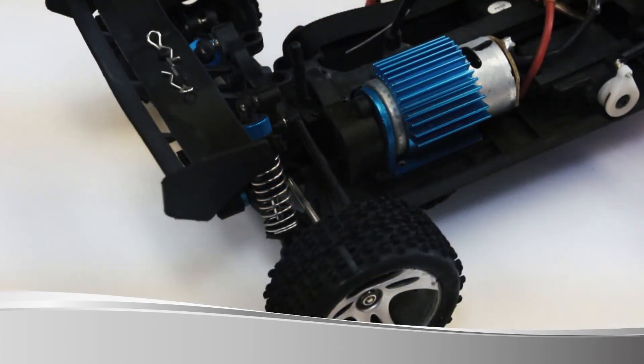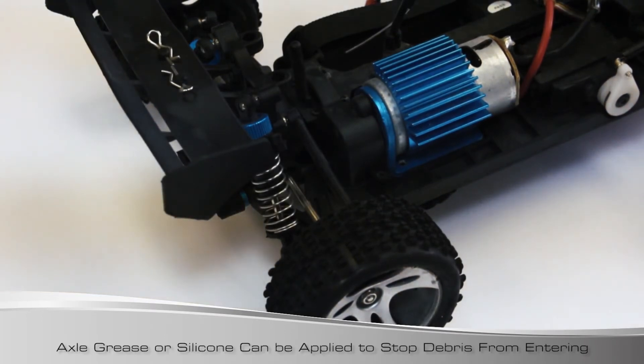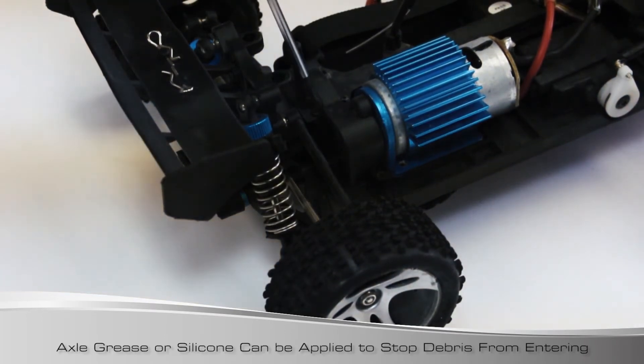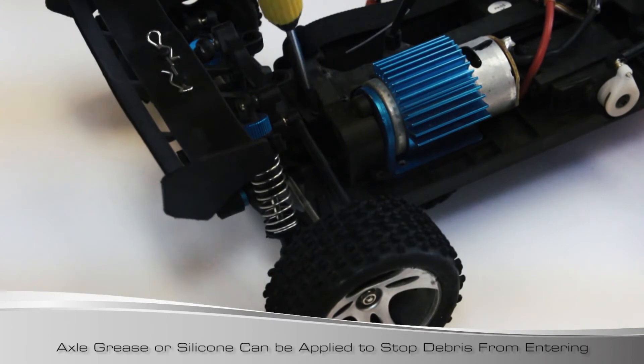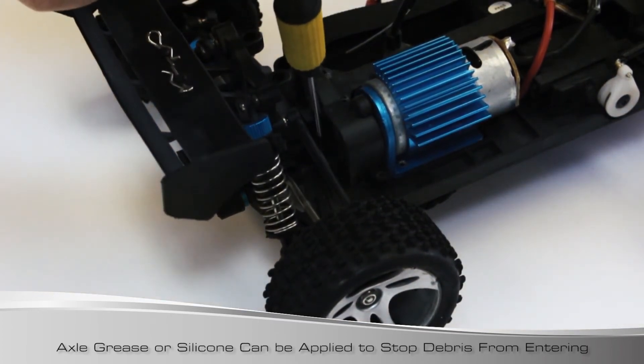So once you've actually checked the drivetrain and the gears and everything are moving freely again, to stop the little pebbles from getting back inside, the only area where we really found any issues is this vertical edge here and the horizontal one along the chassis.